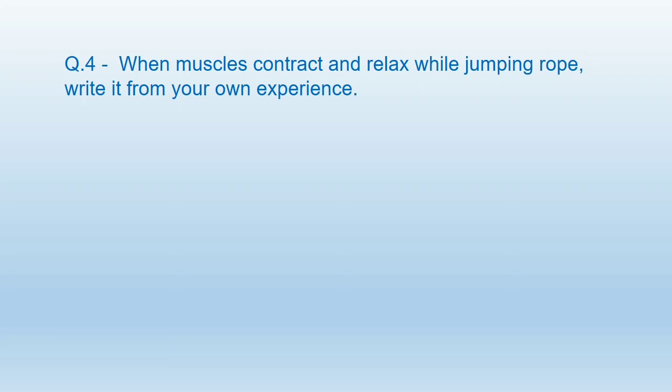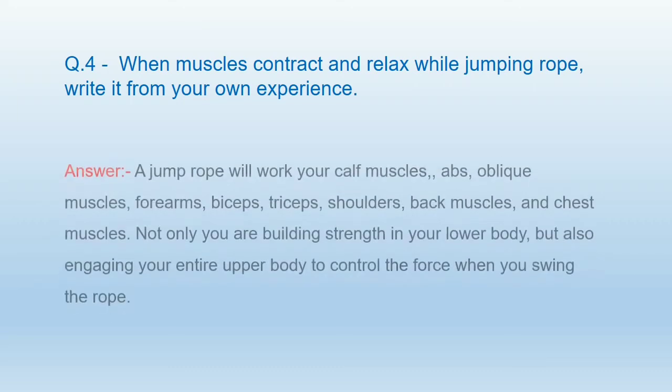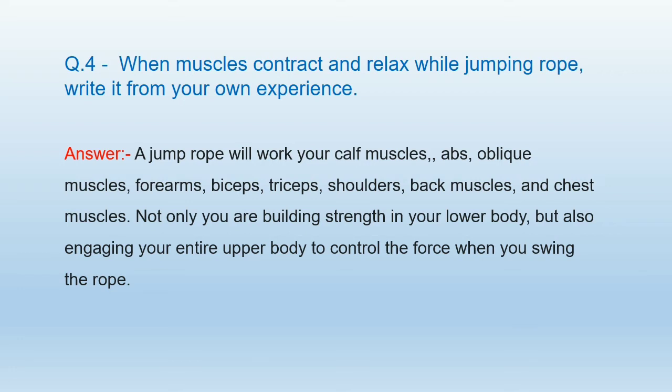Question number 4: When muscles contract and relax while jumping rope, write it from your own experience. The answer is: Jumping rope works your calf muscles, abs, oblique muscles, forearms, biceps, traps, shoulders, back muscles, and chest muscles. Not only are you building strength in your lower body, but also engaging your entire upper body to control the force when you swing the rope.